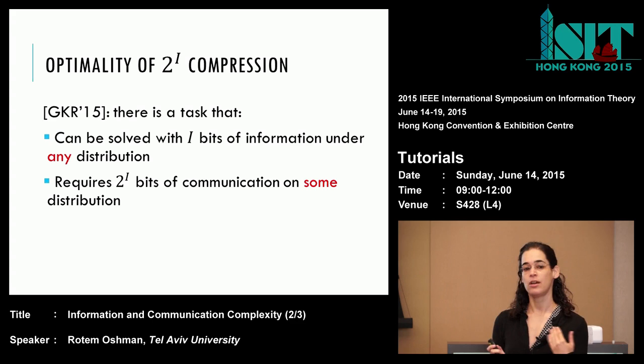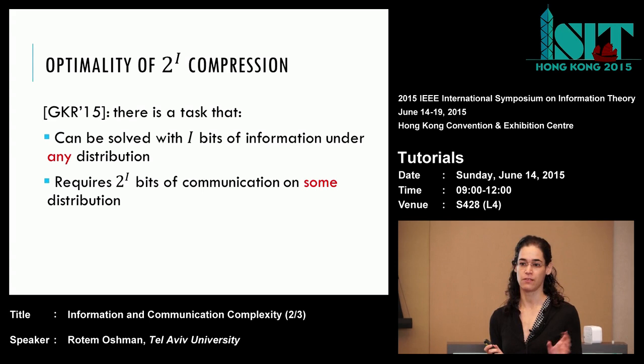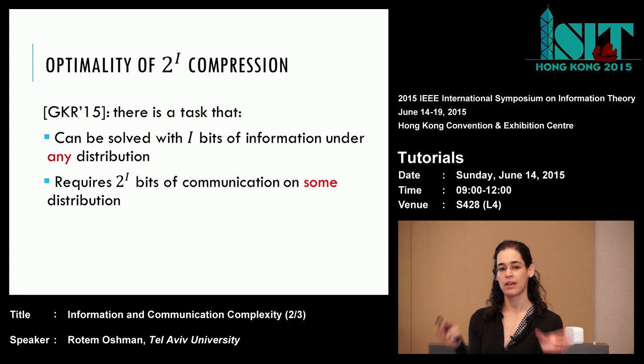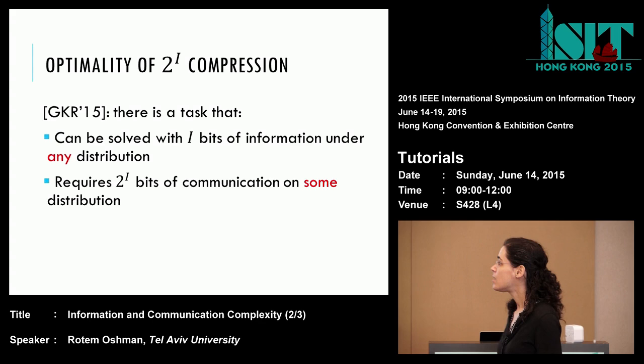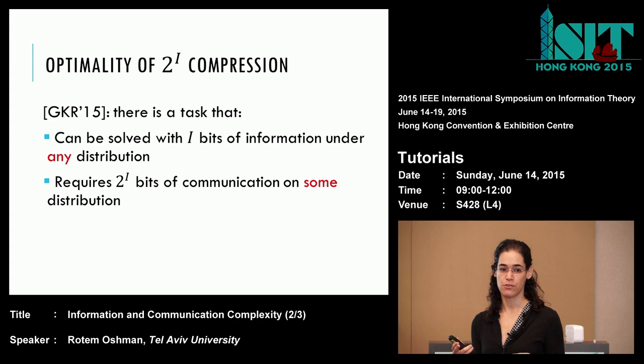I'll show you a really recent counterexample by Ganor, Kol, and Raz — they also had a counterexample from last year, a little more complicated but with a stronger statement. What they show is there is a task — not a function but a sampling task — that you can always solve with i bits of information where i is a parameter, but you cannot solve it with 2^i or fewer bits of communication for some special hard distribution.